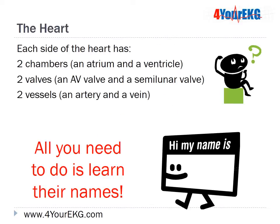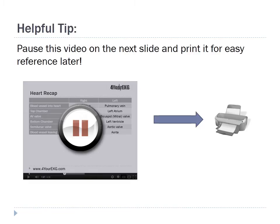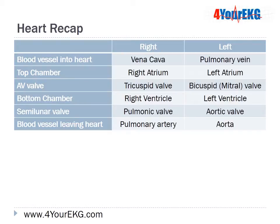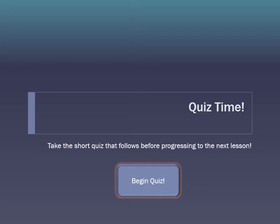So each side of the heart has two chambers — an atrium and a ventricle — two valves — an AV valve and a semilunar valve — and two vessels — an artery and a vein. All you need to do is learn their names. Pause this video on the next slide and print it for easy reference. This chart provides a recap of all the parts of the heart we've learned so far. In future lessons, we'll learn how these parts work together. Let's see how much you learned by taking a brief quiz.